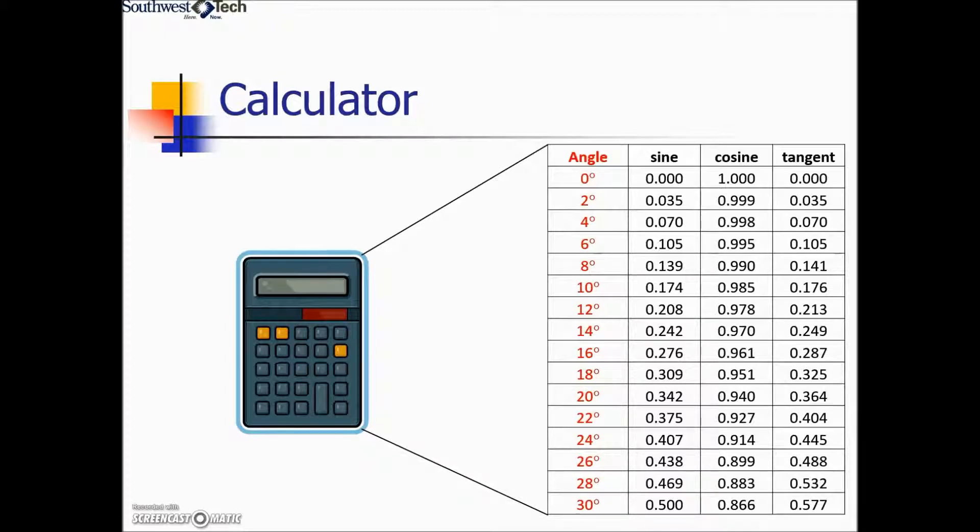The calculator can replace that table of values. Here the table is showing us that regardless of the size of the triangle, if we have an angle measuring 12 degrees, that sine ratio and cosine and tangent ratios will always be the same. The calculator will give us that information and replaces the use of tables.